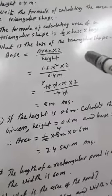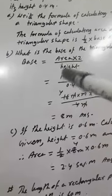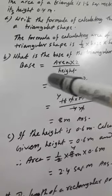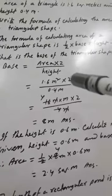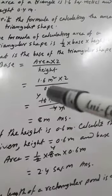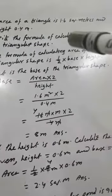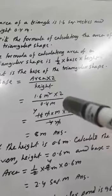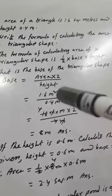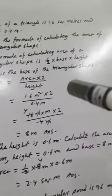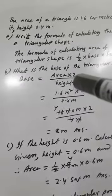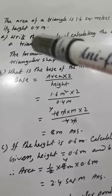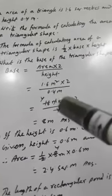What is the base of the triangle? We have to find the base. Base equals area multiplied by 2 divided by height. Area is given as 1.6 square meters, multiplied by 2, and height is given as 0.4 meters.